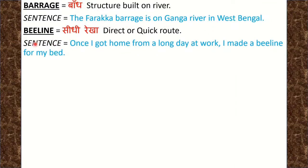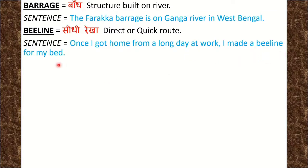Next word is Beeline. Beeline means सीधी रेखा या सीधा रुख, यानि direct or quick route. Sentence: Once I got home from a long day at work, I made a beeline for my bed. मैं एक लंबे दिन के बाद थका हुआ घर आया और सीधा अपने bed का रुख किया.